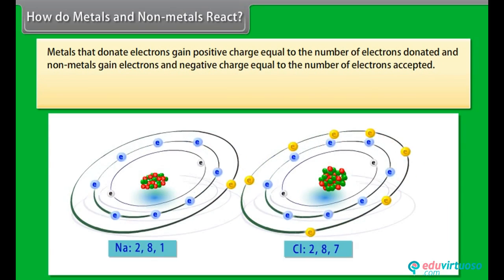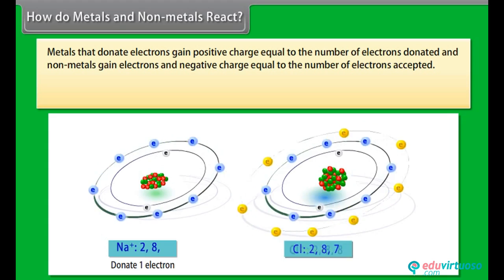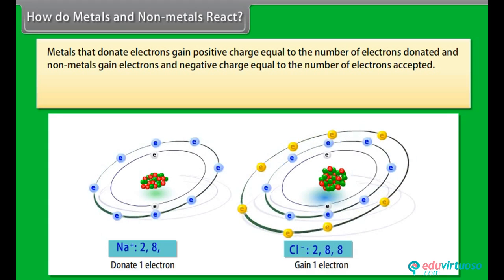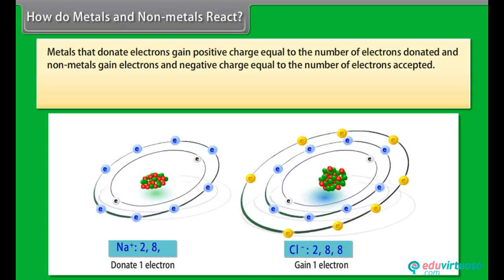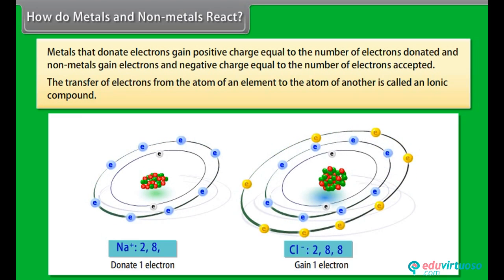When a metal atom donates 1, 2 or 3 electrons from its valence shell to another non-metal atom that has the ability to accept these electrons, it is known as electrovalency. As a result of this, both these atoms form the structure of an inert gas. The transfer of electrons from the atom of an element to the atom of another is called an ionic compound.